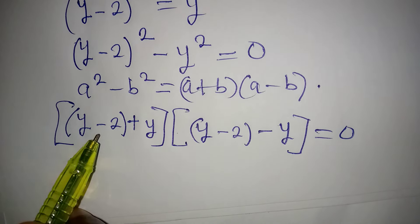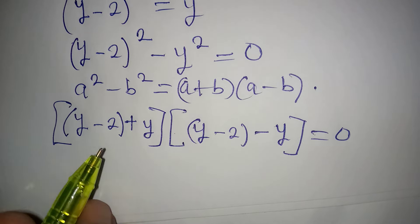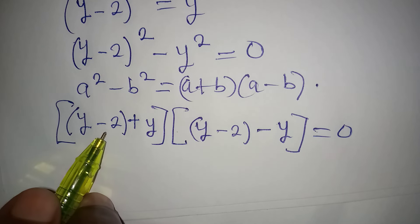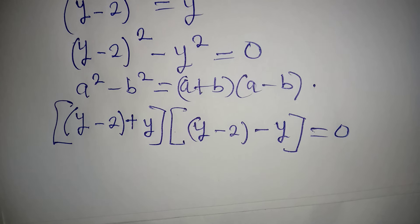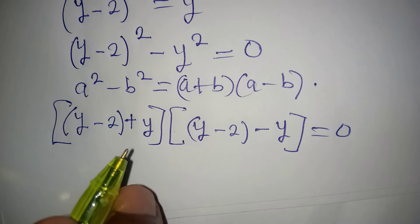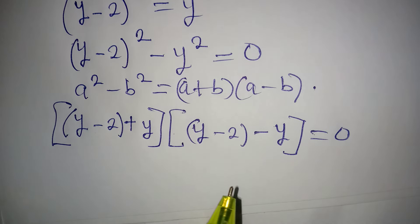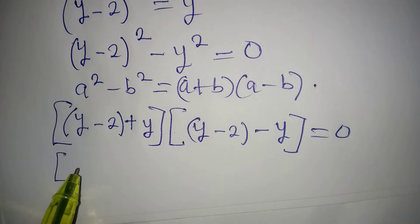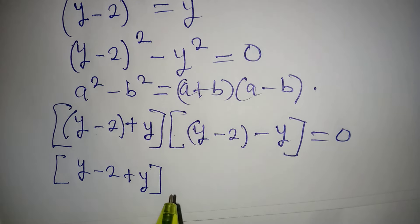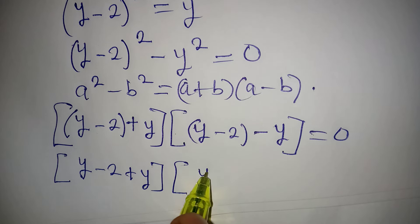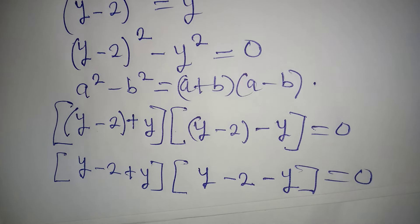Now, to open these brackets — somebody might be tempted to multiply terms inside, but that is wrong. You simply open the bracket provided there is a sign between the two terms. In the first bracket we have y minus 2 plus y, and in the second we have y minus 2 minus y, all equal to 0.